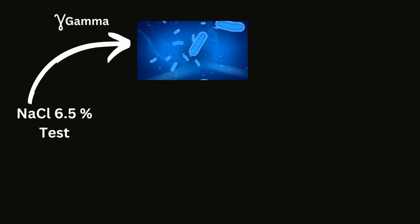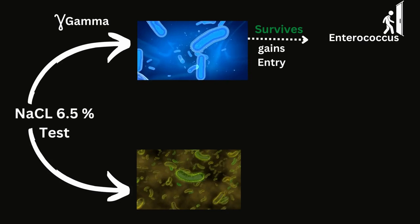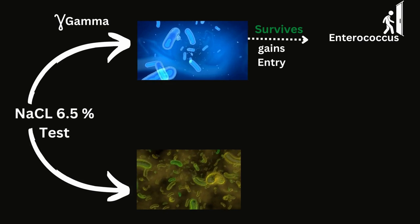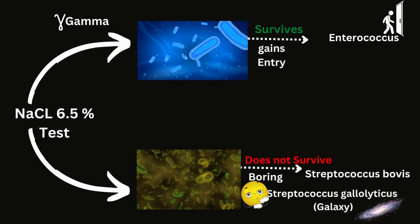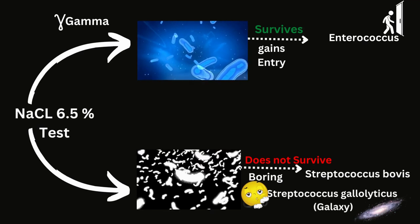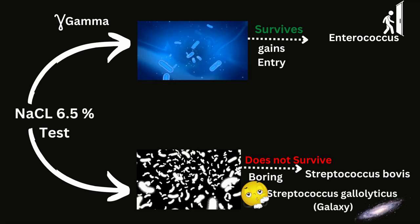Moving on to gamma, who have no hemolytic activity, we ask them if they can grow in 6.5% NaCl solution. If they can, we permit them entry and they are called enterococcus. Those that cannot even survive in 6.5% NaCl solution are called boring microbes that just blindly stare at the galaxies in the sky — therefore they are called S. bovis, also known as S. gallolyticus.